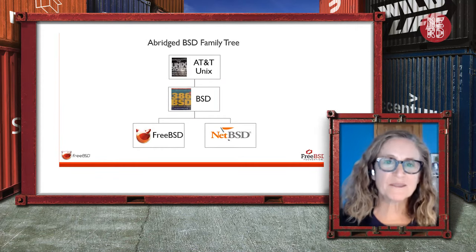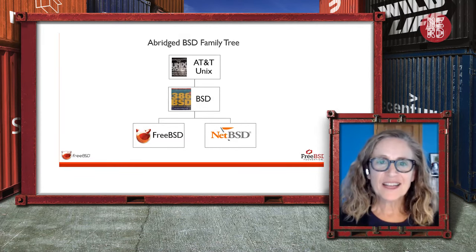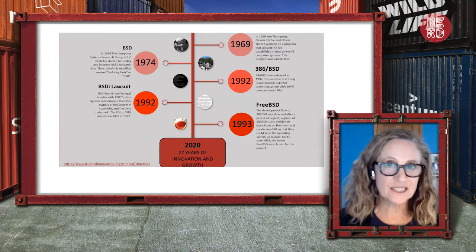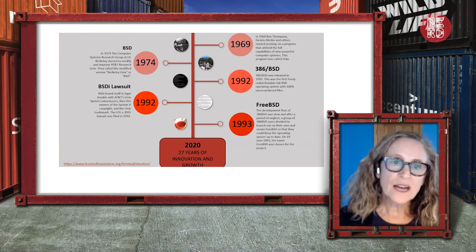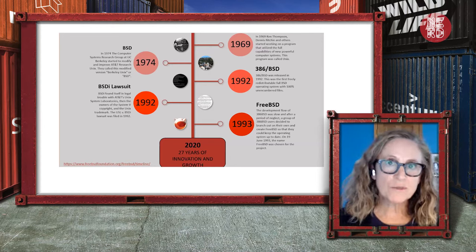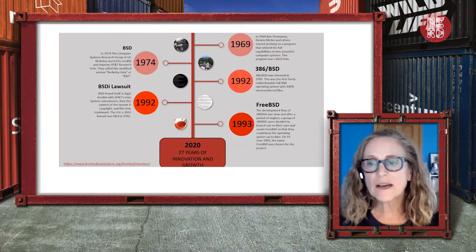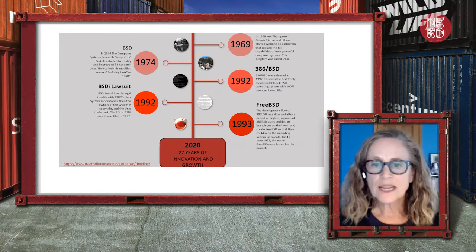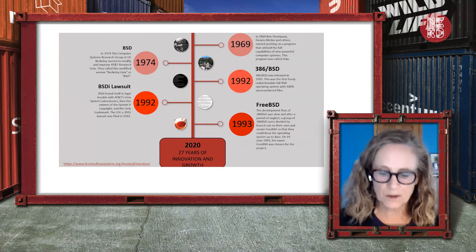Here's a simplified, abridged version of our history. Unix started in 1969 out of Bell Labs, and then in 1974 Berkeley started working on it too, doing research and adding improvements. It was in 1992 that we had our first unencumbered, full-blown operating system available to the world. Then in 1993, both NetBSD and FreeBSD branched out on their own.